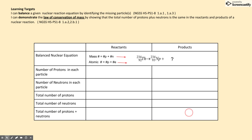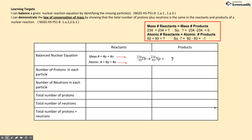Notice that the total number of protons and neutrons is the same in the reactants and the products. On to another example — we determine the mass number and atomic number of the missing particle by doing subtraction. We find that since the mass number of the missing particle must be 0 and the atomic number must be negative 1, that means the missing particle is a beta particle, or an electron — but we call it a beta particle in a nuclear reaction.